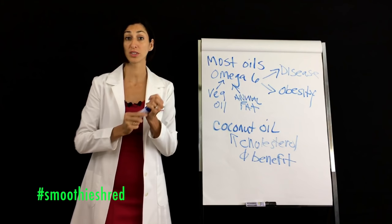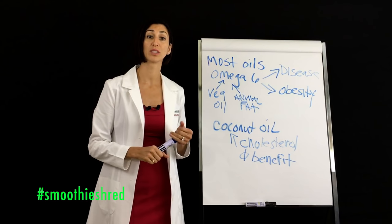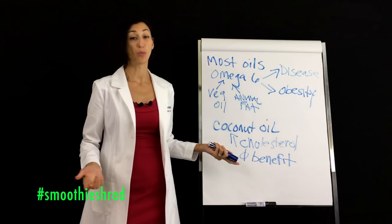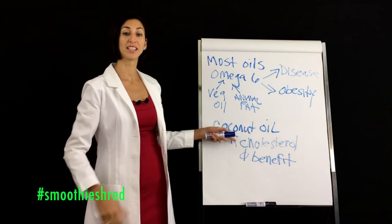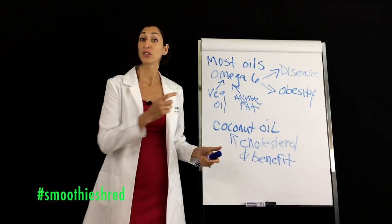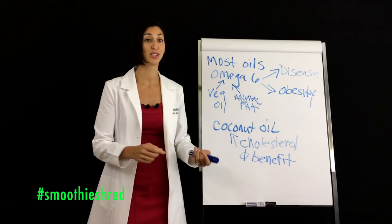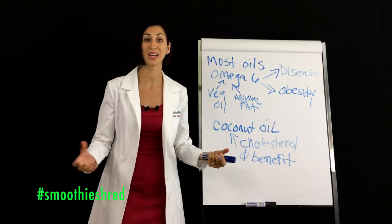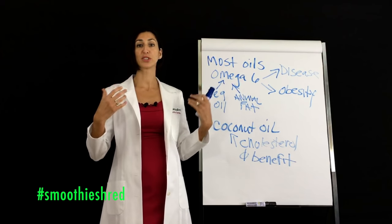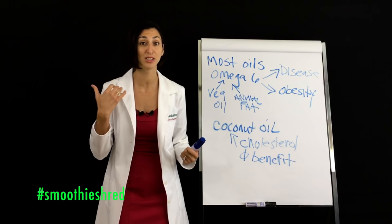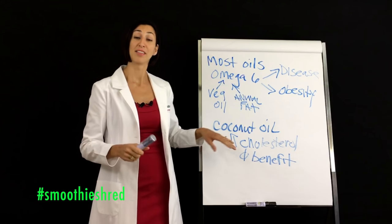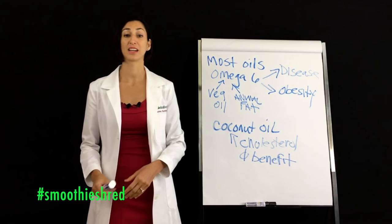At worst, you're increasing your cholesterol, which increases your risk of stroke and heart attack. And at best, no benefit at all. So it is not doing you any good to add coconut oil to your smoothies or to your diet. Now, coconut oil is great topically. You can use it to keep mosquitoes away. There was one study that suggested it might be helpful with head lice. Topically it's great for your skin. It's a great conditioner for your hair. But consuming it, there is no proven health benefit, and there's a good possibility that it could actually hurt you.